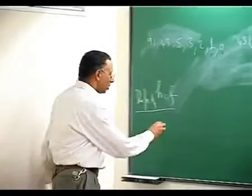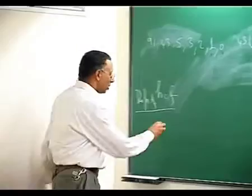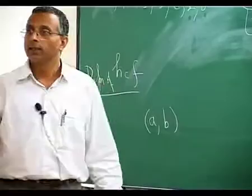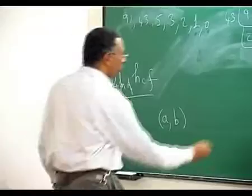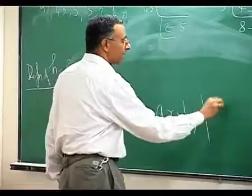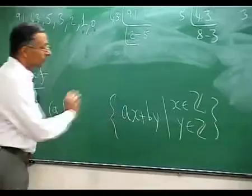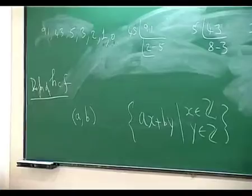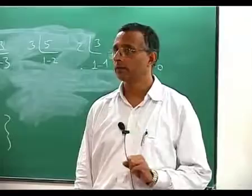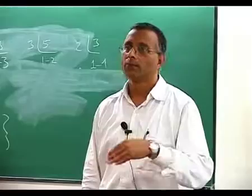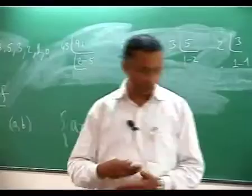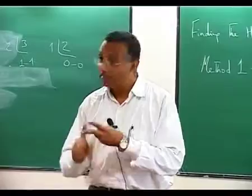Here is another way of looking at the HCF. If A and B are my given integers, I could look at the set {Ax + By} as X and Y vary over all integers. I claim this is an ideal in the ring of integers. What does an ideal mean? It is a subset of a ring — non-empty, closed under addition as an additive subgroup — and if I take some element there and multiply it by any element of the ring, it should come back in there.